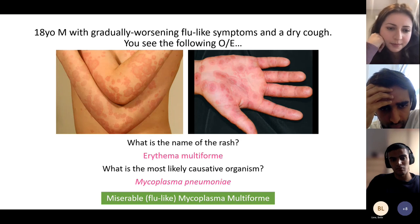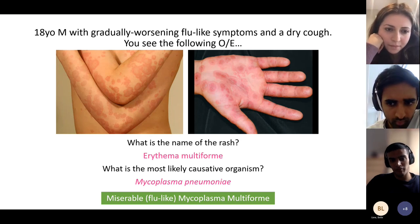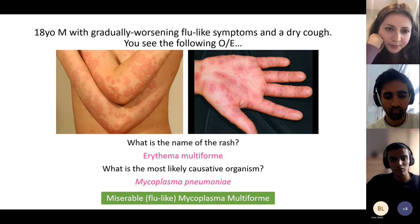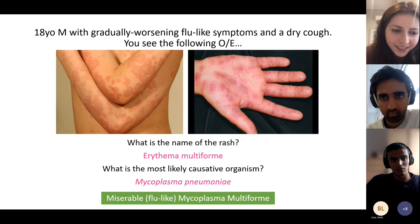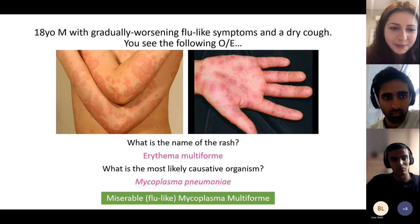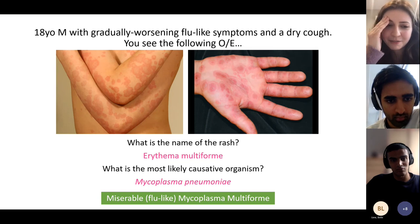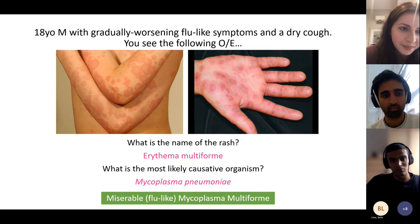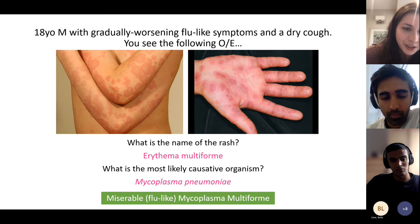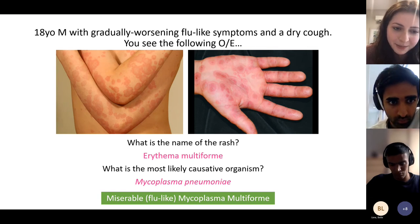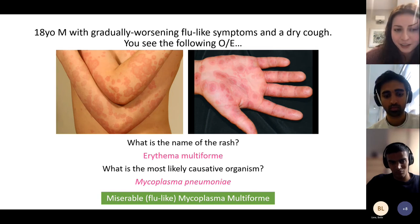Another picture: a distinctive skin rash — erythema multiforme — combined with a pneumonia picture points to Mycoplasma pneumoniae, an atypical cause of pneumonia. A helpful mnemonic: miserable (flu-y symptoms) — Mycoplasma — multiforme.